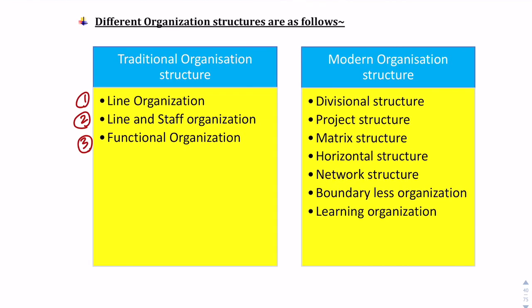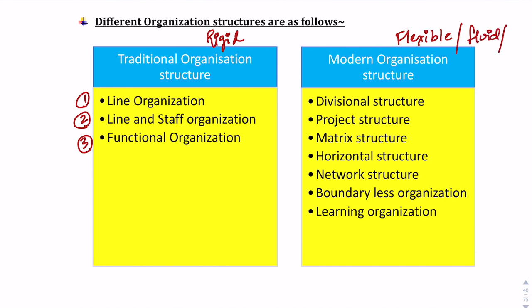Having understood the key elements of organization structures, let us now look at different types. There are traditional organization structures and modern organization structures. Traditional structures are more rigid and stiff, whereas modern structures are more flexible and fluid — they are a mix of different structures from traditional organization structure theories. Traditional organization structures are only three: line, line and staff, and functional.